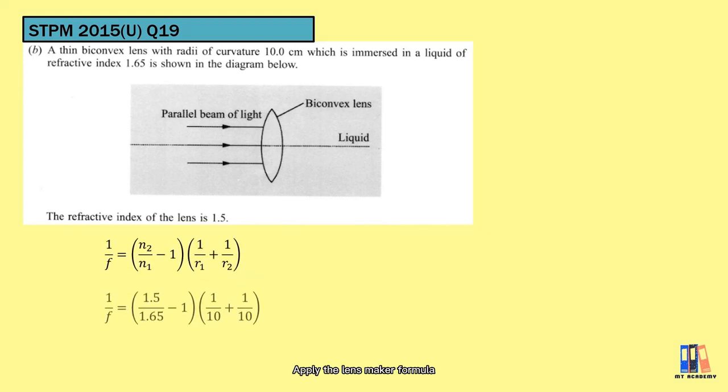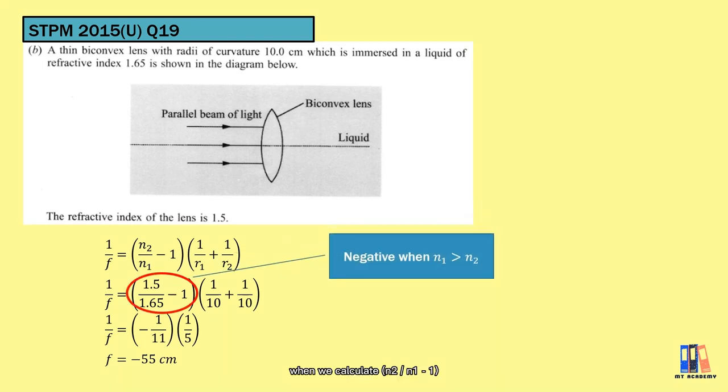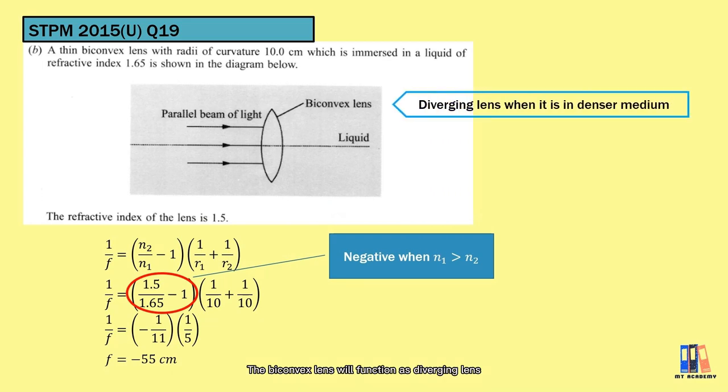Apply the lens maker formula, we have found that the focal length now is negative 55cm, so this is quite interesting. As you can see that n1 is bigger than n2, when we calculate n2 over n1 minus 1, we will get a negative value. So, the biconvex lens will function as a diverging lens when it is placed in a denser medium.